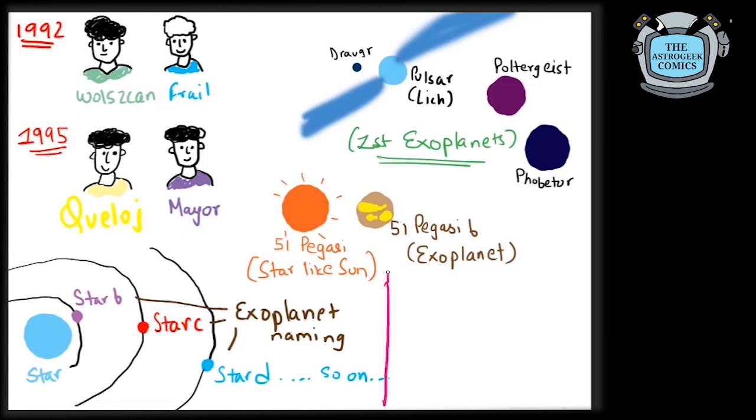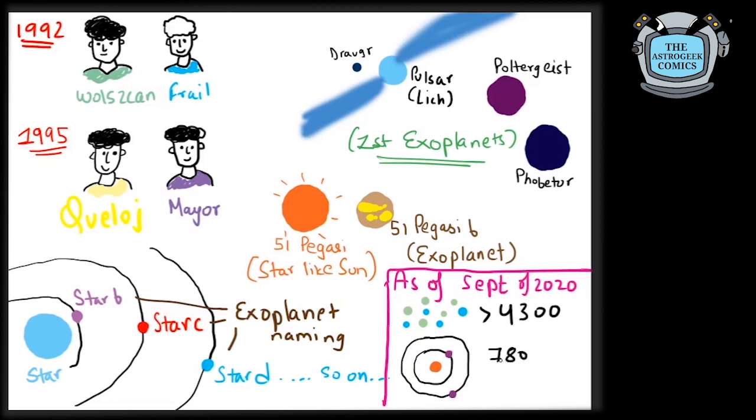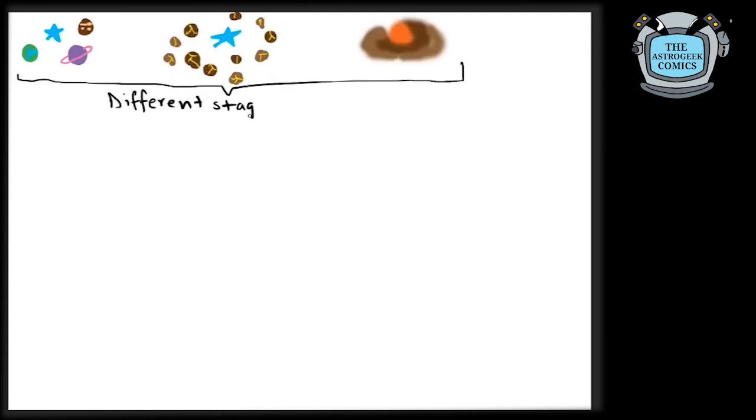Since then, we have come a long way. As the date of making this video, i.e. September 2020, we have confirmed the discovery of more than 4300 exoplanets including 780 multiple planetary systems. We have not just discovered how planets form, but we have also discovered stars in different stages of planet formation.